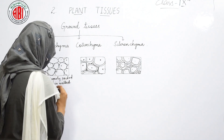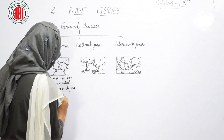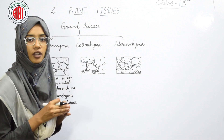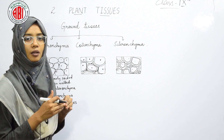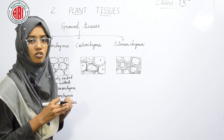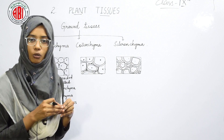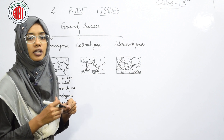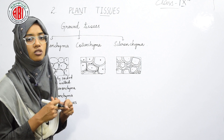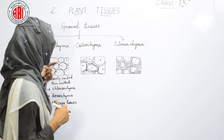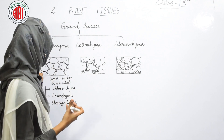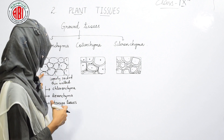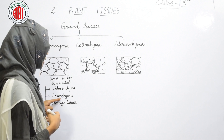Based on these functions, parenchyma is classified into three types: chlorenchyma, aerenchyma, and storage tissues. The parenchymatous cells found at the surface of the leaf contain chloroplasts. Chloroplasts are organelles which contain a pigment named chlorophyll, responsible for imparting green color and for carrying out photosynthesis, allowing plants to make their own food. These specialized parenchymatous cells containing chloroplasts are called chlorenchyma.